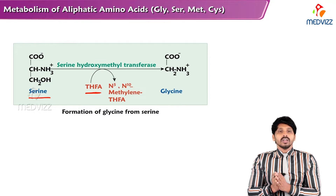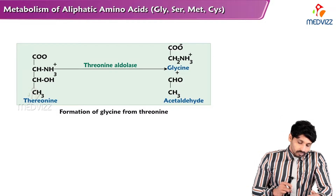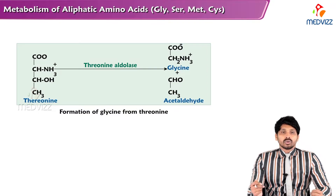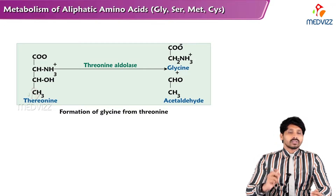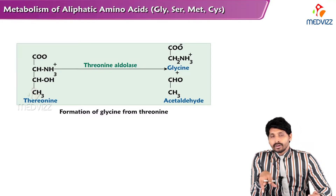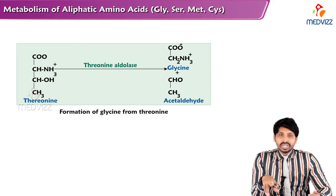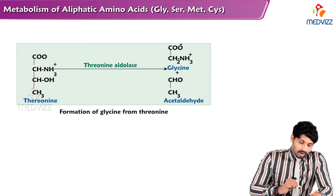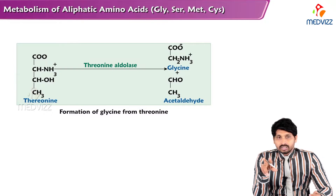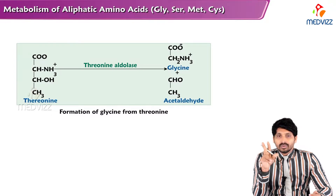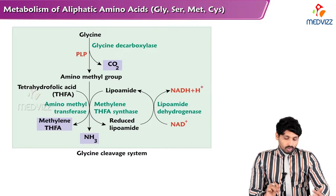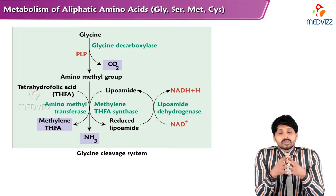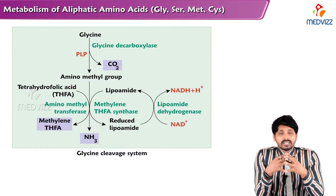The next source of glycine is threonine — another hydroxyl group-containing amino acid. Here the enzyme is threonine aldolase, and from threonine you get two products: glycine and acetaldehyde. So these are the two main reactions by which glycine is synthesized in our body.